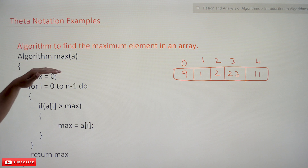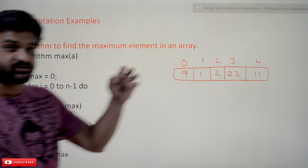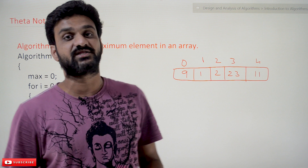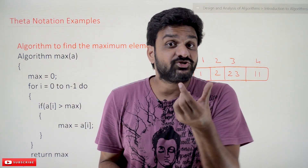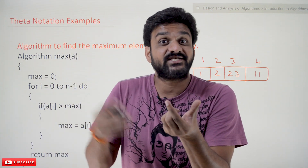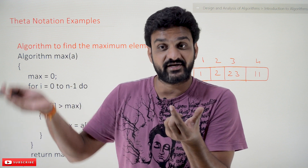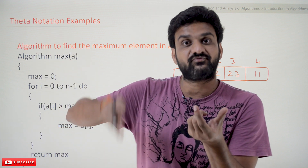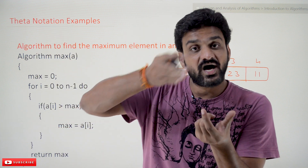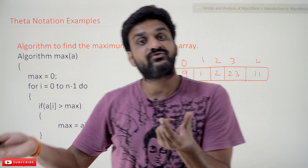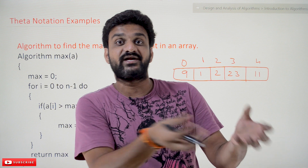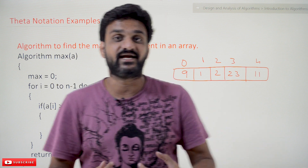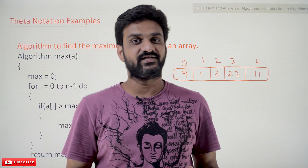We will first try to understand this algorithm, and after that we will try to find the time complexity. For that time complexity, which asymptotic notation has to be provided — whether it has to be provided with big O, theta, or omega? If any one of the notations is provided, then why only that notation? That is what we will try to understand in this class.